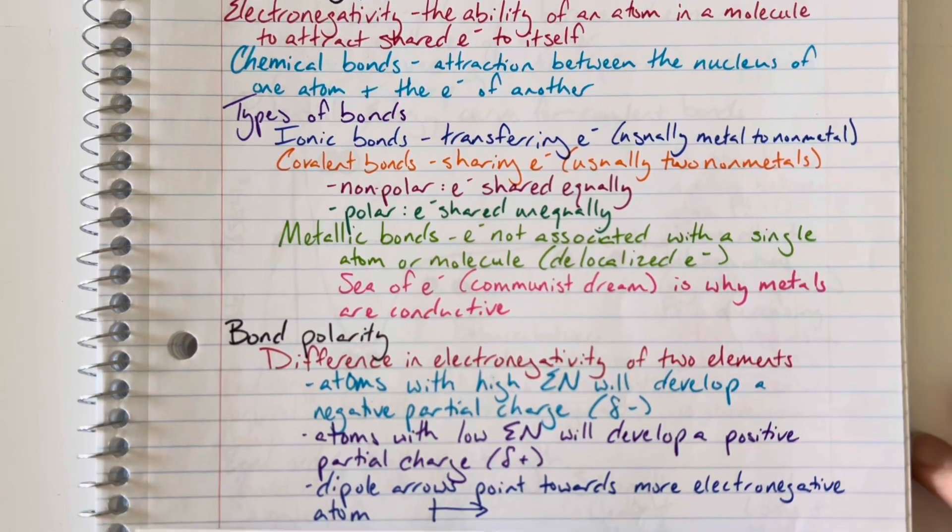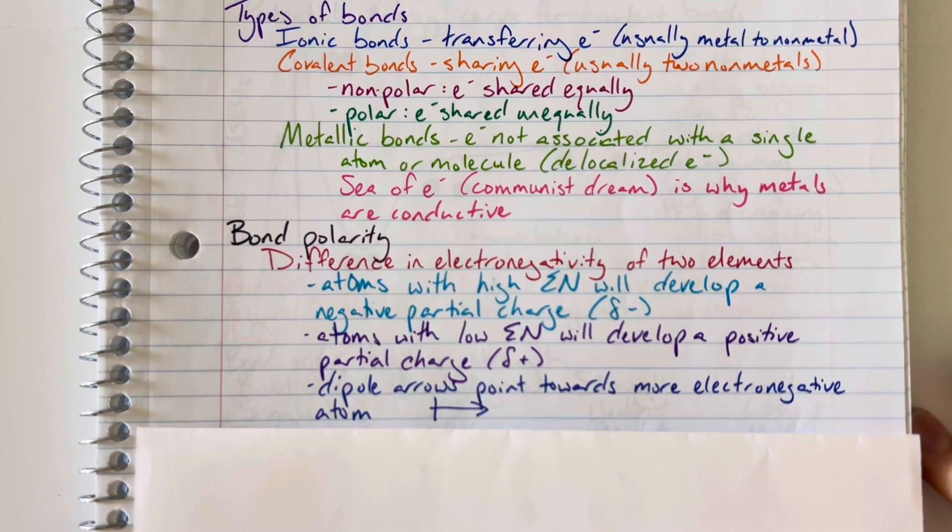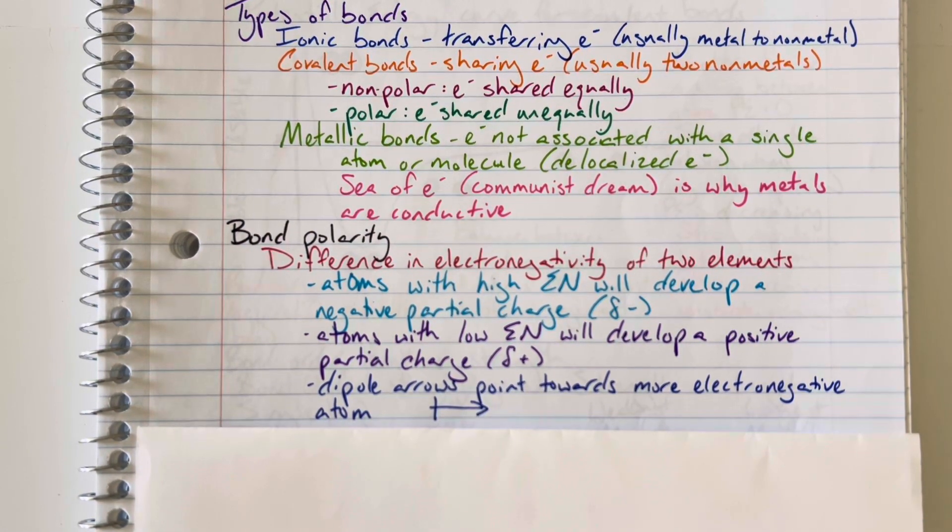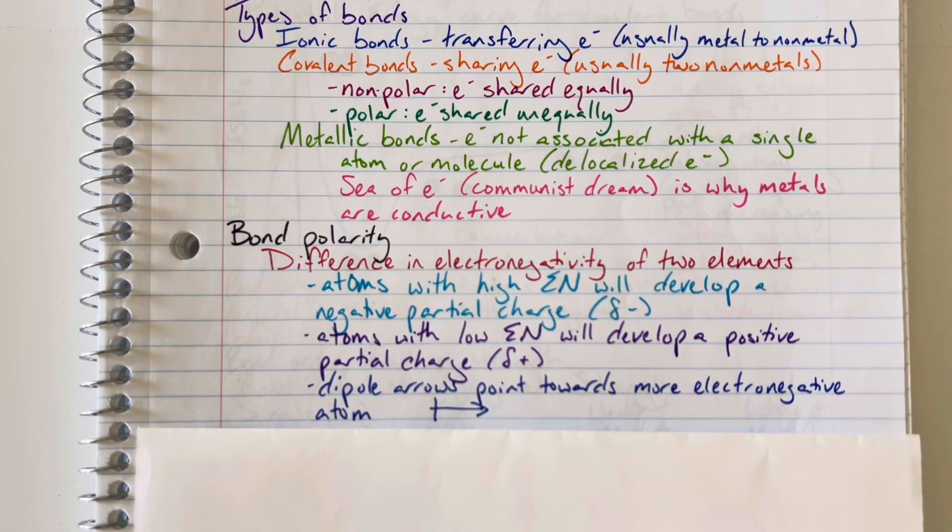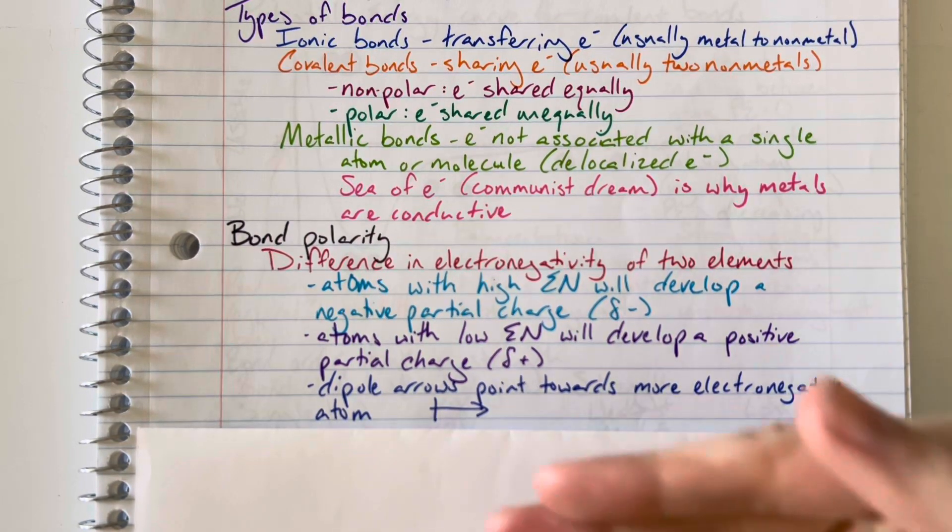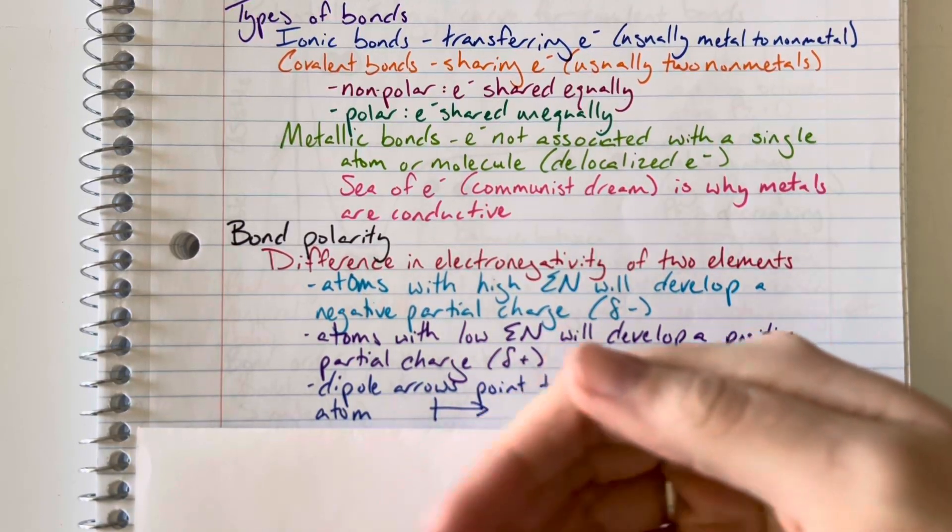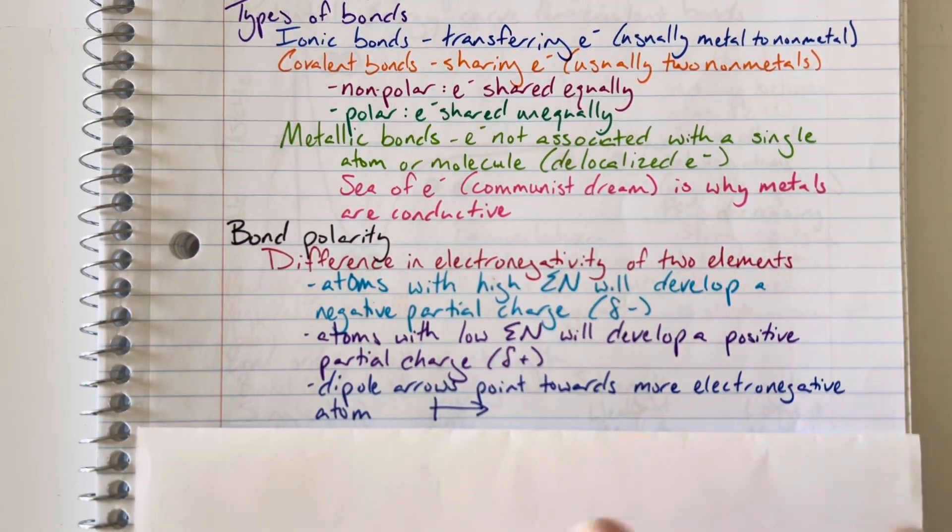If we are dealing with showing where those electrons are living within a compound, we might use something called a dipole arrow. Dipole arrows point toward the more electronegative atoms. You can see that this is the pull, where the electrons are being pulled, where they are flowing toward using those dipole arrows.